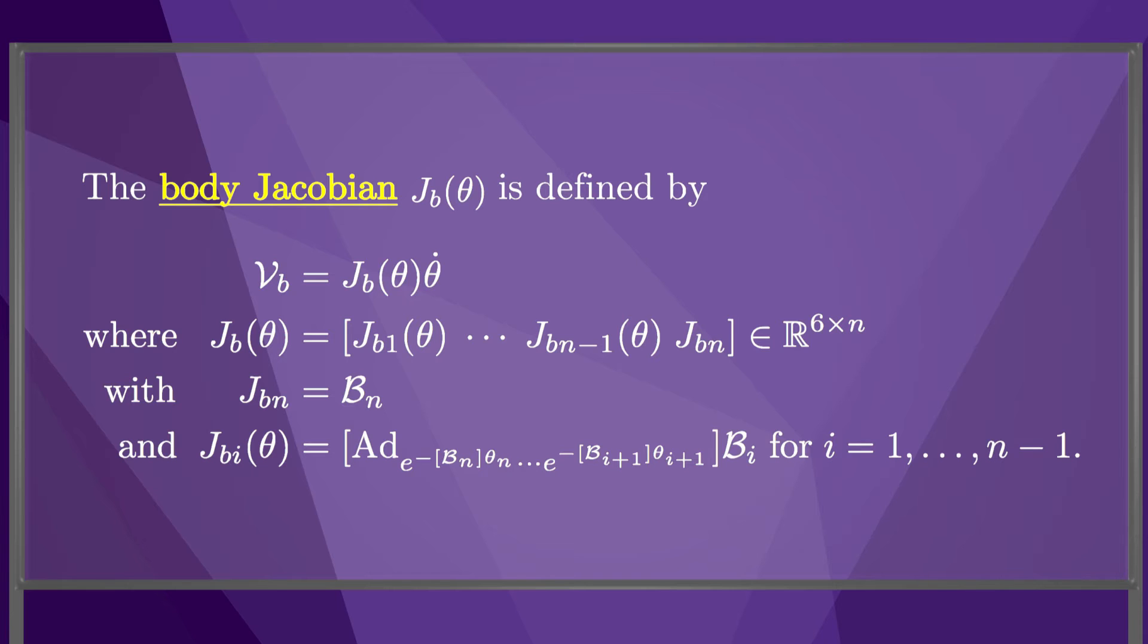Any other column i of the body Jacobian is given by the screw axis Bi pre-multiplied by the transformation that expresses the screw axis in the B frame for arbitrary joint positions. You can see that Jb1 depends on the positions of joints 2 through N, Jb2 depends on the positions of joints 3 through N, etc. You can also see that the body Jacobian is independent of the choice of the space frame S.